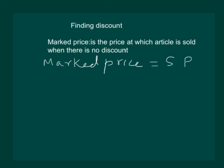Now it is time for us to understand discount. Discount is a reduction given on the mark price of an article. This is generally given to attract customers to buy goods or to promote sales. We can find discount by subtracting the sale price from the mark price.